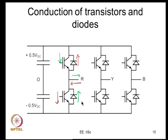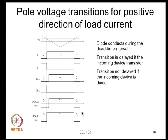Taking a relook at the average pole voltage versus the ideal: the diode conducts and continues conducting during dead time, whereas ideally it should have switched. If the incoming device is a transistor, there is a delay in the pole voltage transition. On the other hand, if the incoming device is a diode, it does not get delayed - the transition is immediate.